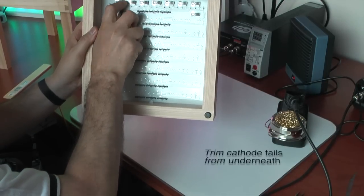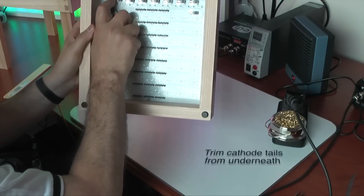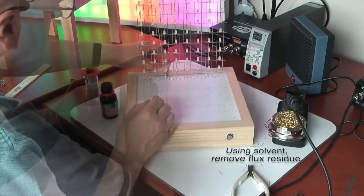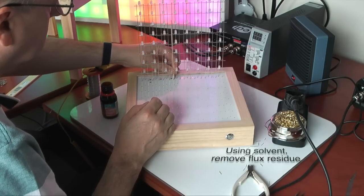The base is then inverted so I can trim away the excess wire from underneath. I then use some solvent and a long cotton bud to clean away the flux residue, and I did this after each panel was fitted.